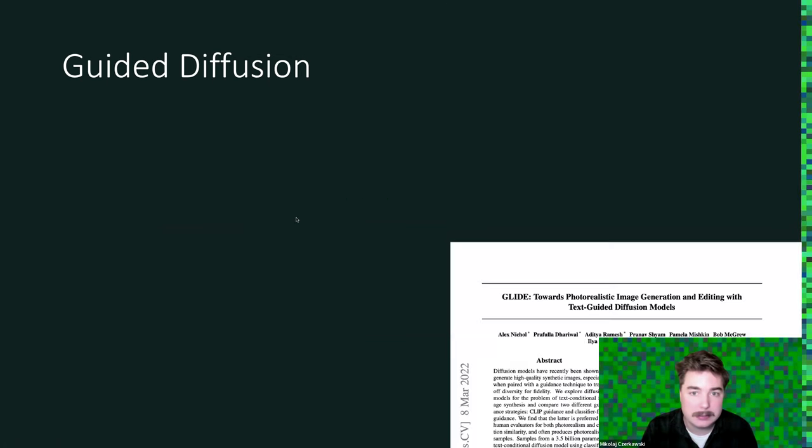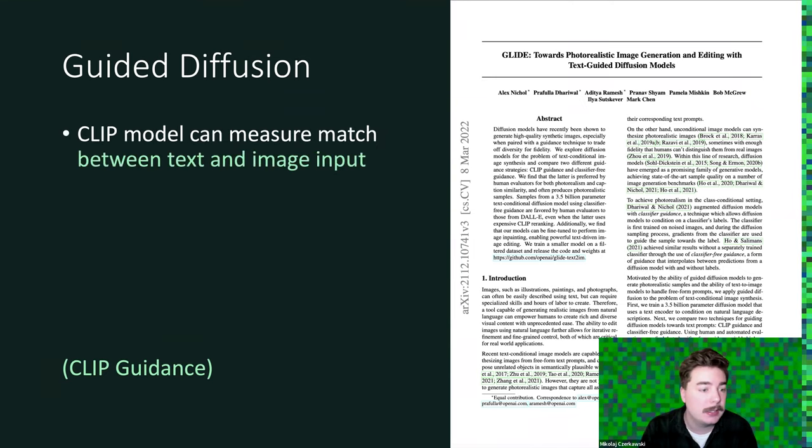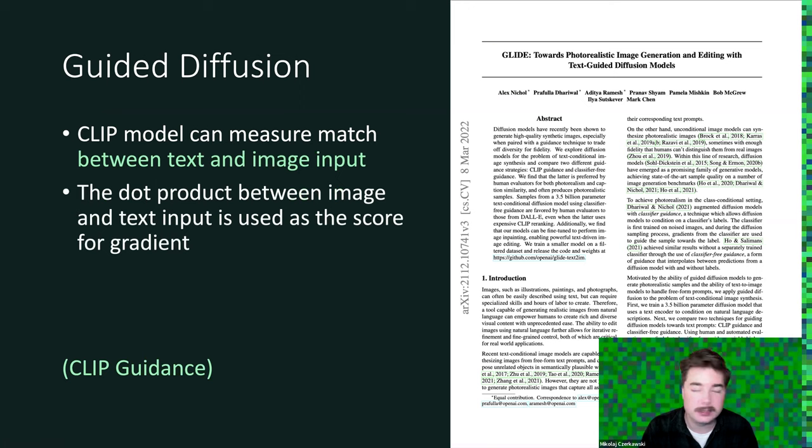There's also other types of guidance in Glide. For example, CLIP, which is a general text plus vision, text plus image model, has been used to guide the samples. CLIP model can measure a specific consistency between text input and image input.